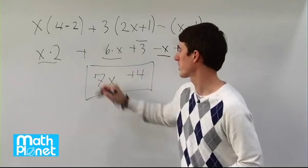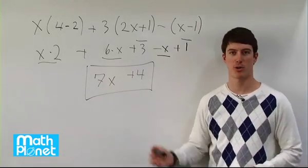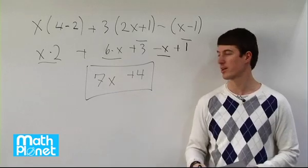There it is, simplified as much as possible. We have all of our like terms together, no brackets or anything like that, 7x plus 4.